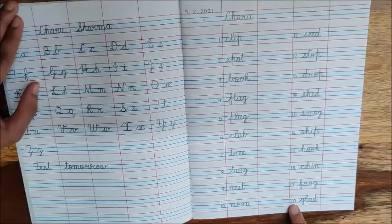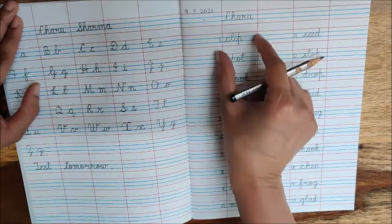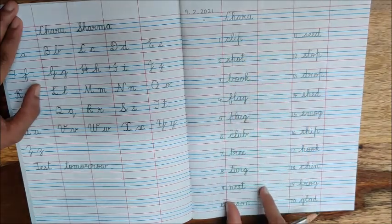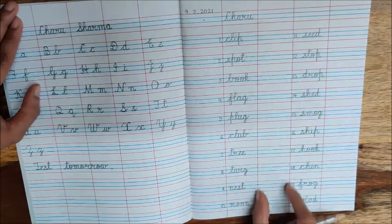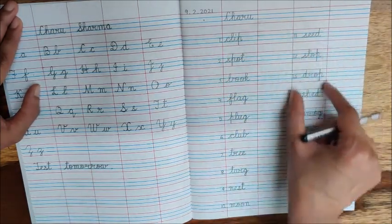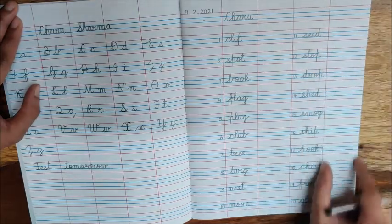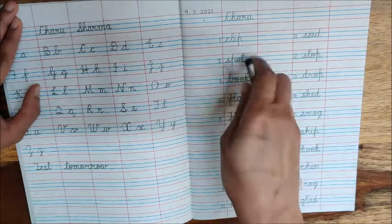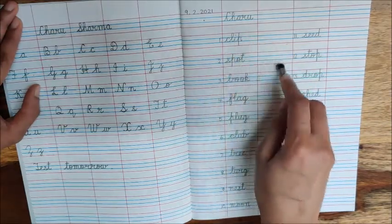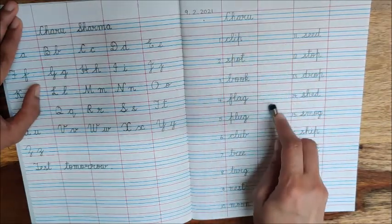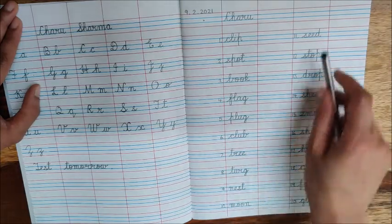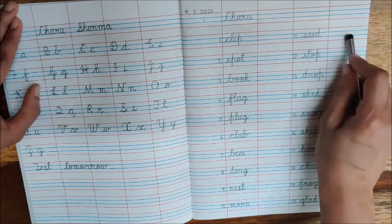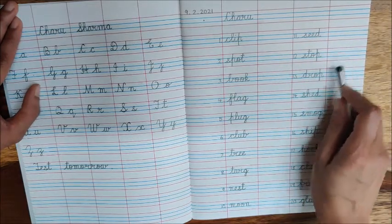Now children, you have to practice writing all these words one more time. These words you will write again here, and these words you will write again here. Clip, clip. Spot, spot. Book, book. Flag, flag. Like this you will write in this column. Then these words you will write in this column.